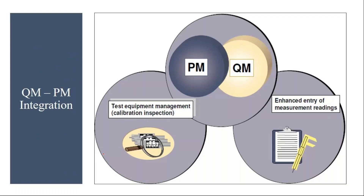In the quality control labs in the organization, they use some test equipment to check the quality of the products. They regularly check whether that equipment is functioning properly. That process is called calibration — they need to ensure that the equipment is functioning properly. So periodically they will calibrate that equipment, such as every month, every six months, or every one year.